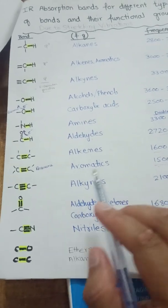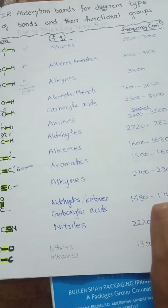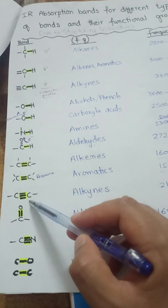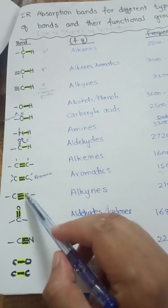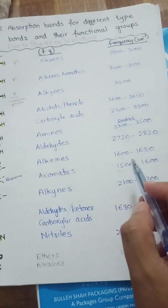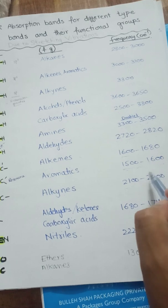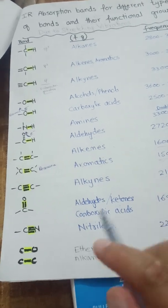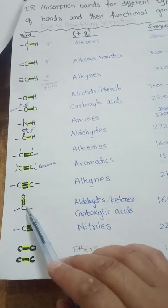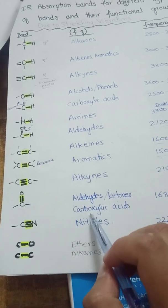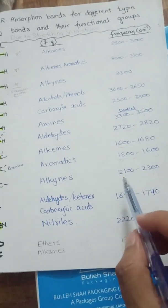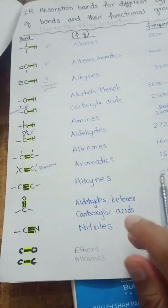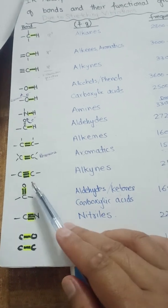The carbon-carbon triple bond in alkynes absorbs from 2100 to 2300 per centimeter. Since the triple bond is stronger than the double bond, it absorbs at a greater frequency than C=C, and C-C single bond absorbs even lower. The carbonyl group C=O, present in aldehydes, ketones, and carboxylic acids, has an absorption frequency ranging from 1680 to 1740 per centimeter, with the general carbonyl region being 1600 to 1800.